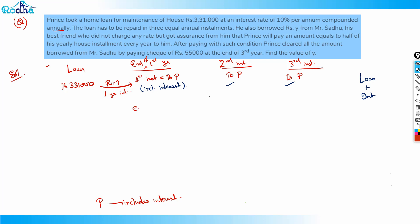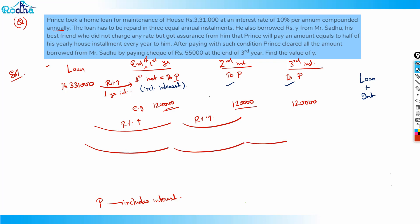If my first installment is rupees P, it includes a one-year interest. It corresponds to some part of the loan. For example, say P = ₹1,20,000 — that part of the loan had one year's interest charged. The second installment of ₹1,20,000 corresponds to another part on which two years' interest was charged. Similarly the third installment — on that part of the loan, three years' interest was charged.